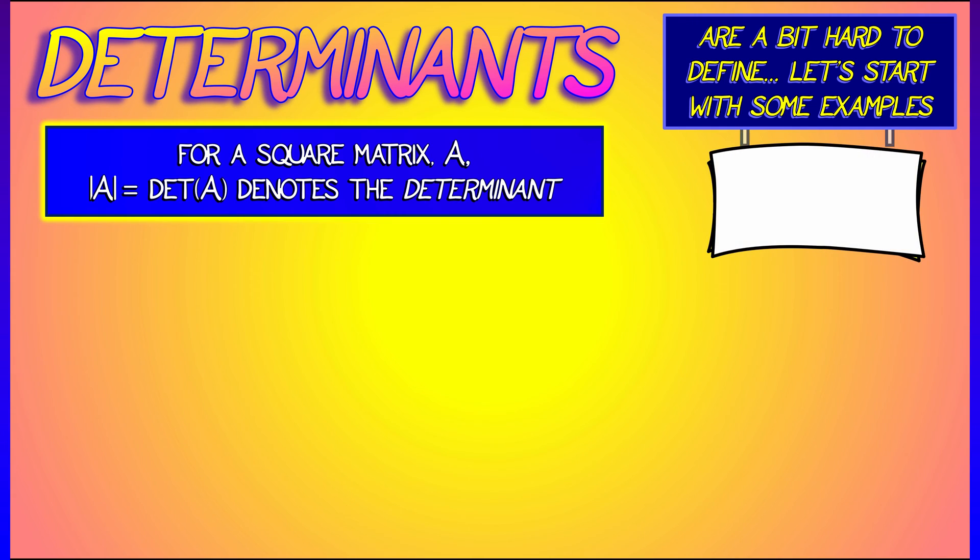First of all, in the case of a one-by-one matrix where your entry is A, then the determinant is simply that entry, A. That's it. And that's pretty simple enough. It's kind of the only thing that it could be.